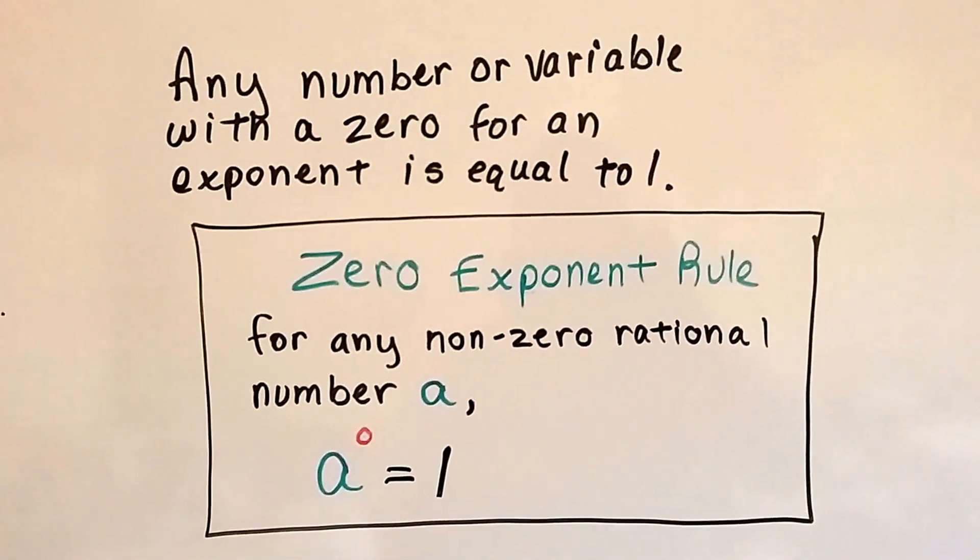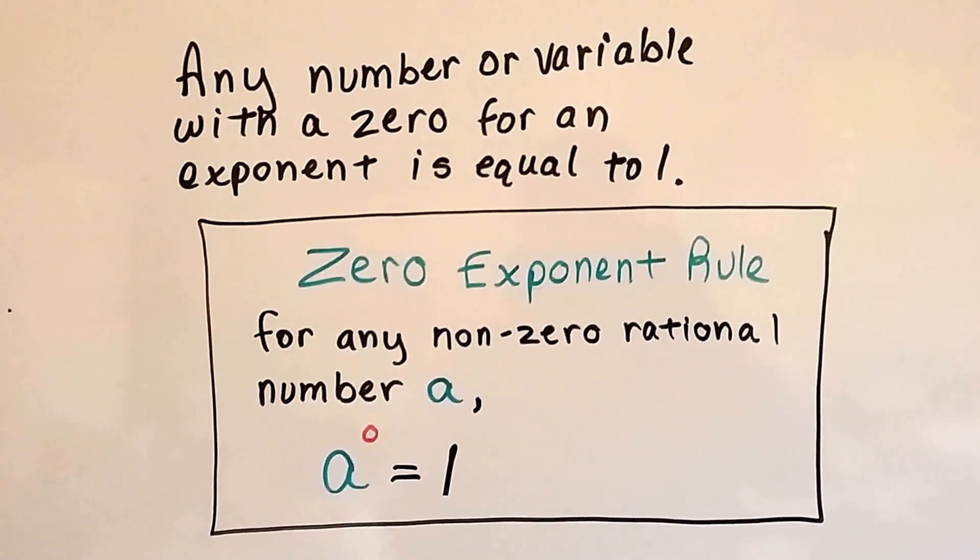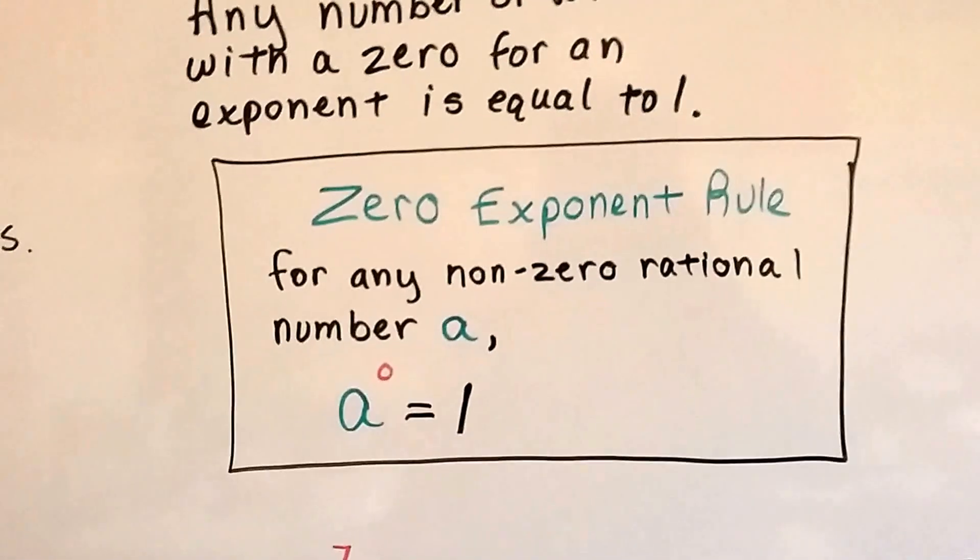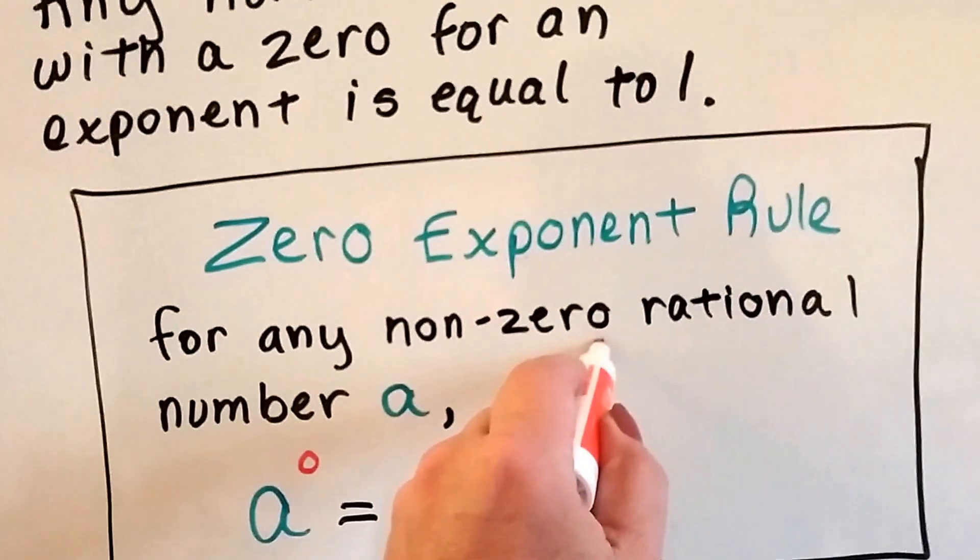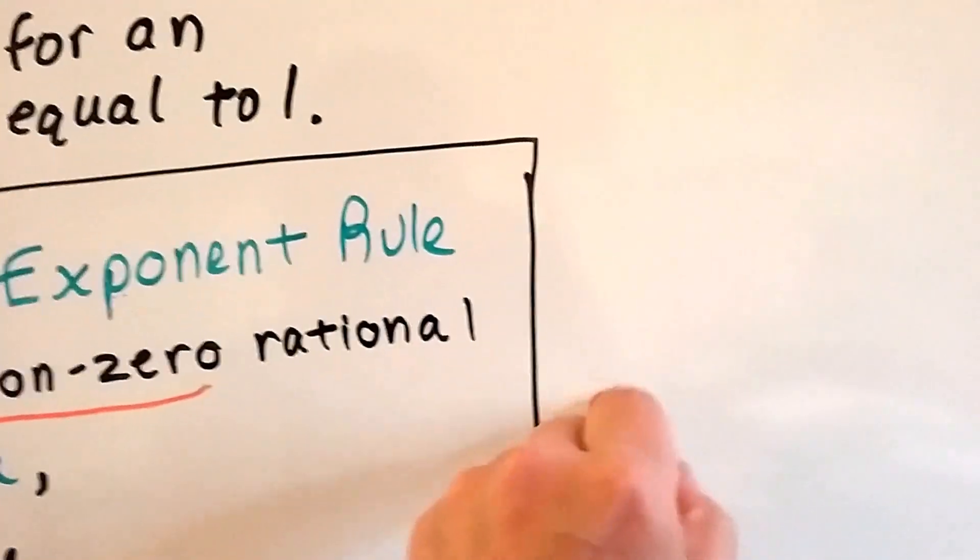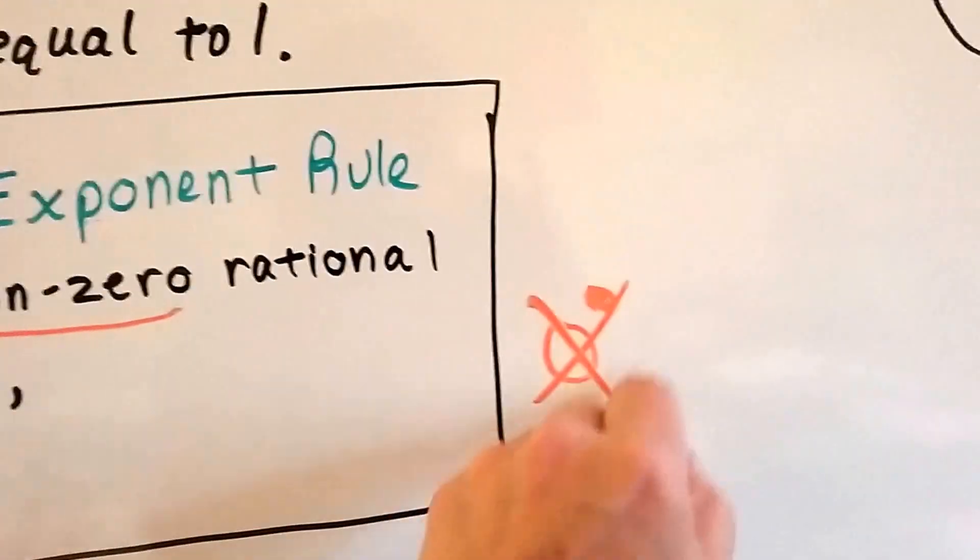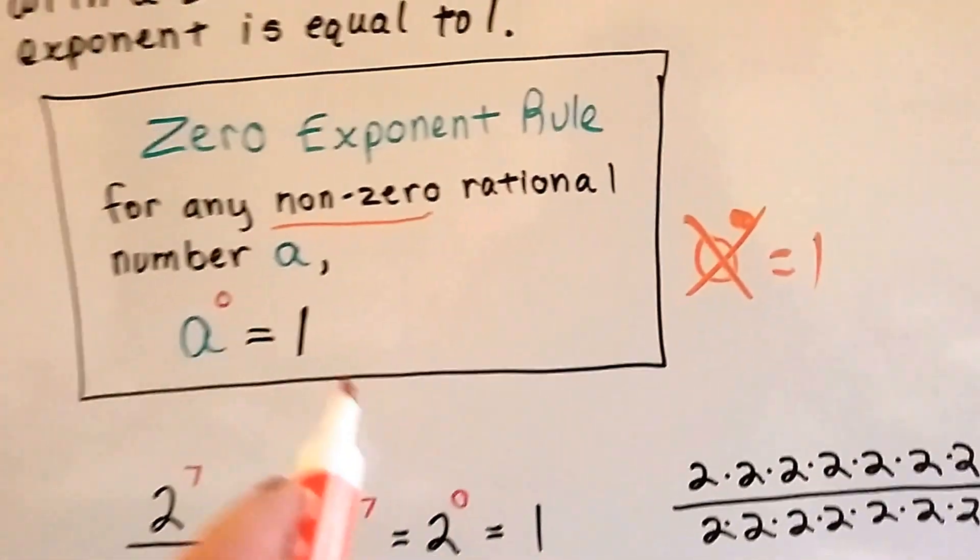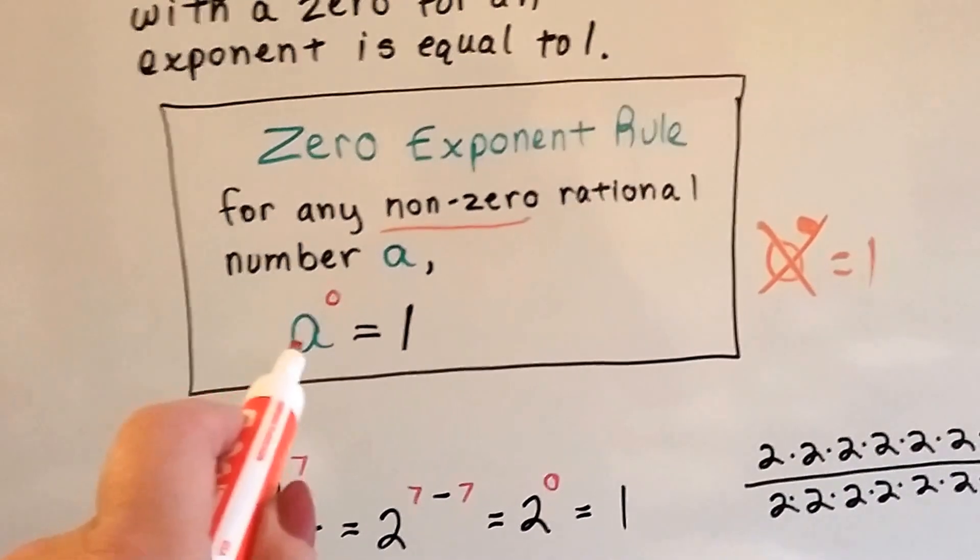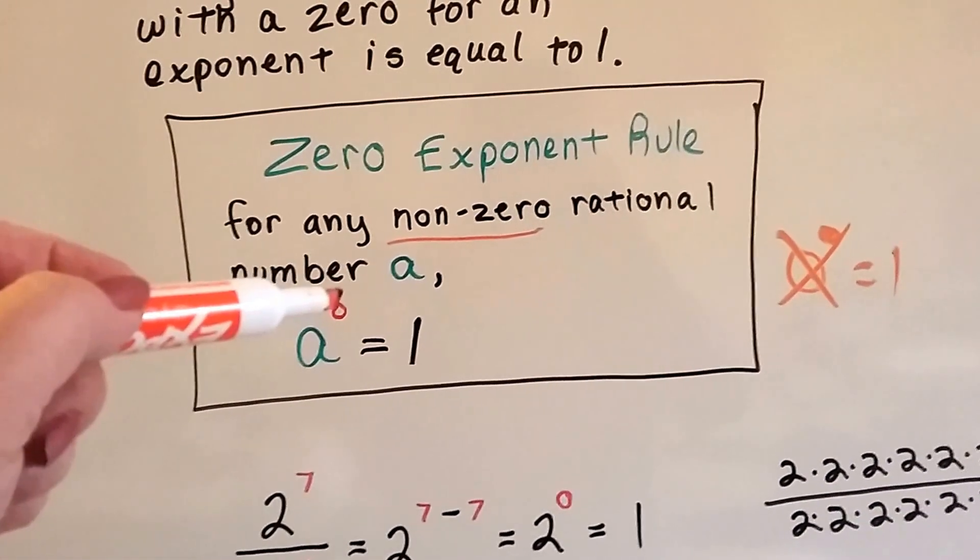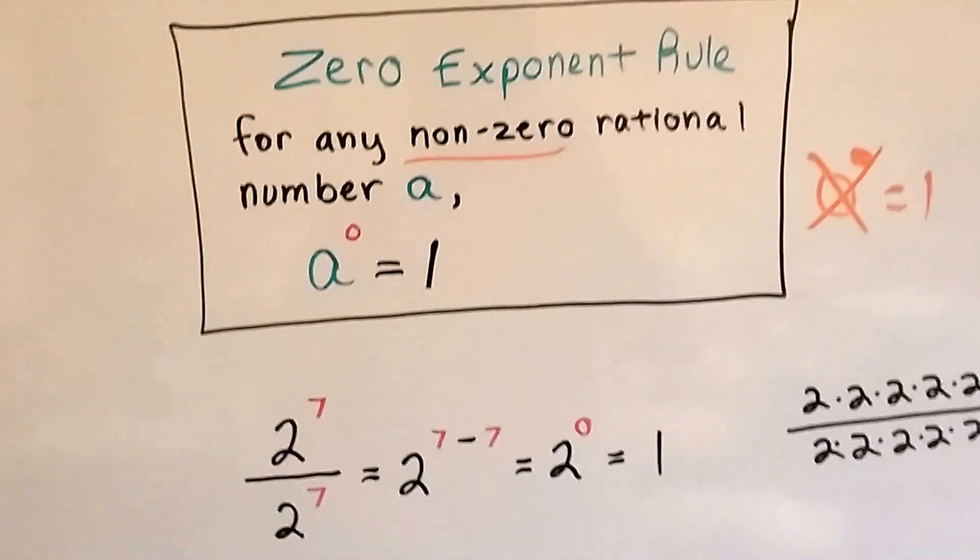The formal rule says for any non-zero rational number a, a to the zero power is going to equal 1. So it's saying you can't do this with a zero. You can't say zero to the zero power. That does not equal 1. They're saying that the base has to be a non-zero number. And then the exponents of zero, then it'll equal 1.